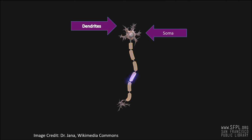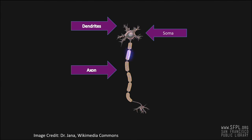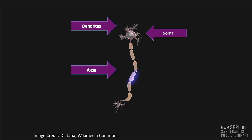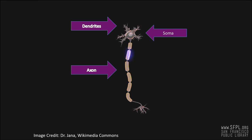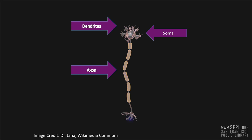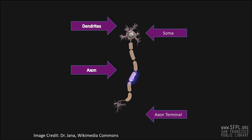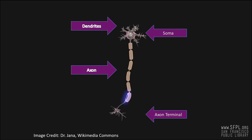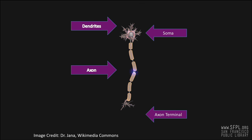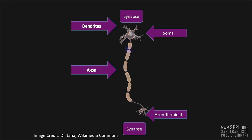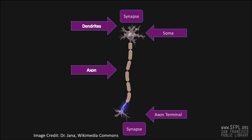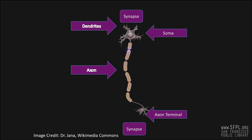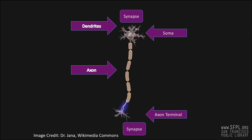The soma refers to the central cell body. The axon is the trunk of the neuron that sends messages or impulses to other neurons. The axon terminal contains the buds at the end of the axon from which chemical messages are sent. The synapses are the small gaps that separate neurons, found between the axon of one neuron and the dendrites of another — basically linked up head to tail.